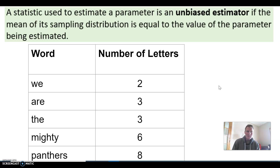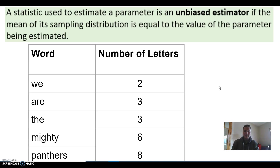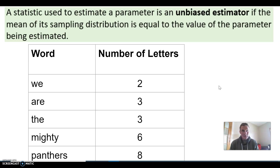So what does it mean for that statistic to be an unbiased estimator? It is an unbiased estimator if the mean of its sampling distribution is equal to the value of the parameter being estimated. We need the mean of the sampling distribution to accurately reflect the true value of the unknown parameter.